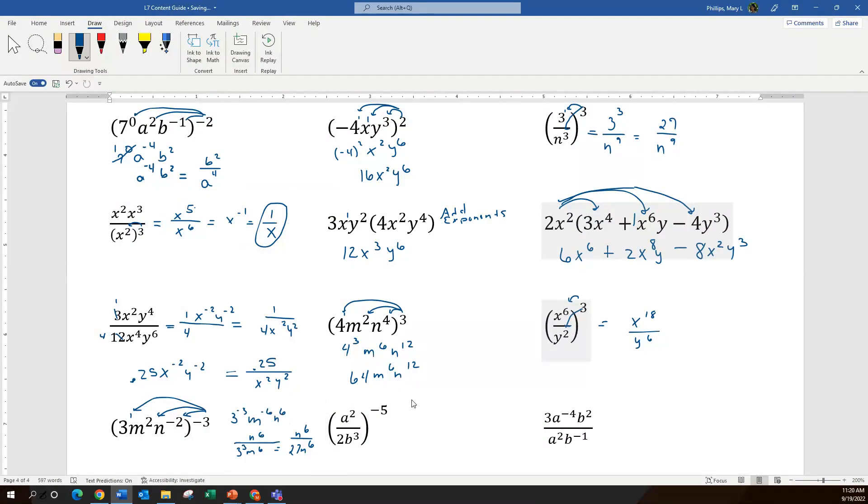Our next one, same deal as before. This exponent that's outside goes to every part, all the exponents inside, including the unwritten one that is on the number. So when I do that on the top, I have a to the negative 10th. In the bottom, I have 2 to the negative 5, and b to the negative 15th.